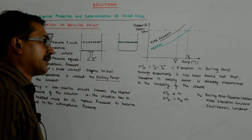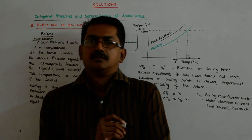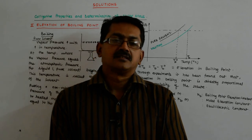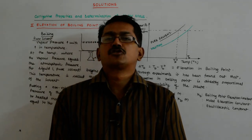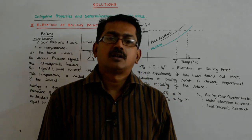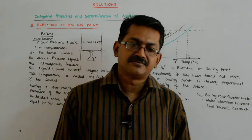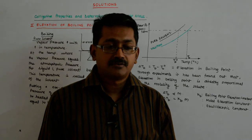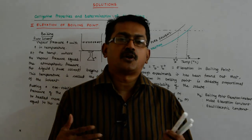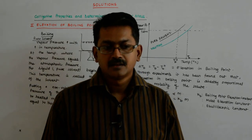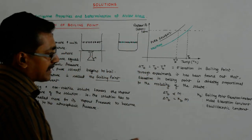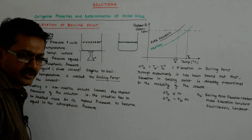There is a word in English, 'ebullient.' It means bubbling with joy — so much so that the bubbling is visible on the surface, just as it is in a boiling liquid. So 'ebullient' comes from boiling. That's why this constant is called the ebullioscopic constant — it is essentially the boiling constant.